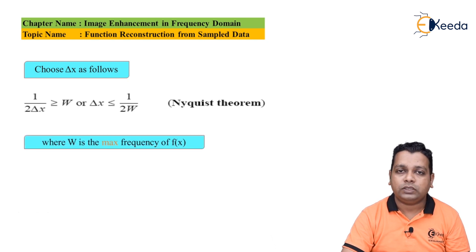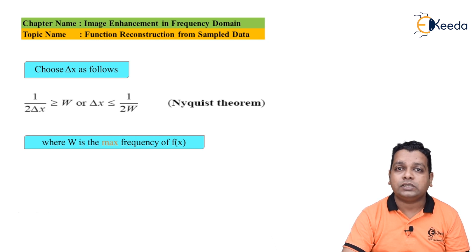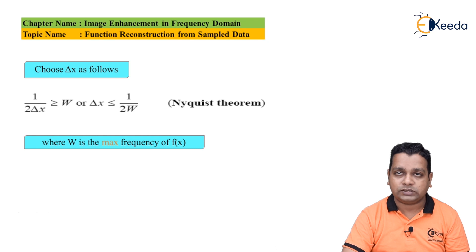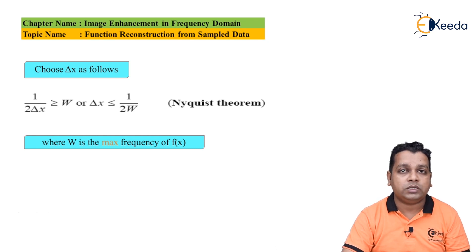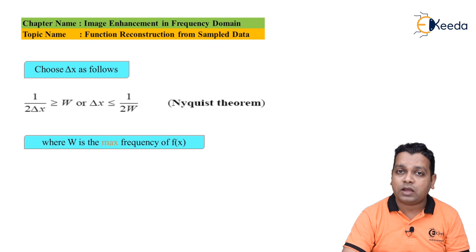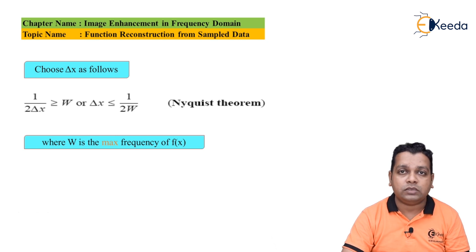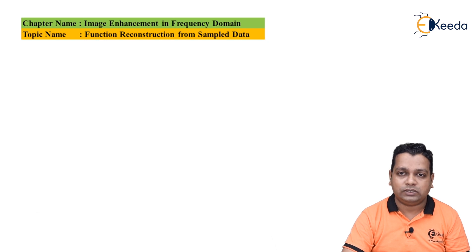In this mathematical representation, W is the maximum frequency of f(x). Whatever you may have learned in digital signal processing for one-dimensional signals is applicable to image processing as well, since images are two-dimensional signals.